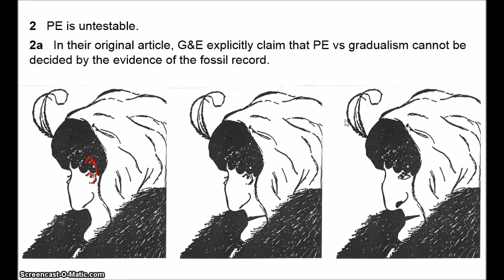However, many other defenders of punctuated equilibrium have argued that it is testable. Gould and Eldridge themselves later changed their minds and argued for its testability — indeed, they argued it has been amply confirmed. But when you look at their original paper you can see why many people felt uneasy about the theory. In any case, there have been other concerns about its testability.